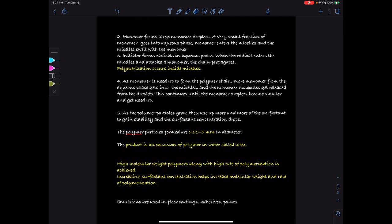We can get high molecular weight polymers along with high rate of polymerization in emulsion polymerization, and increasing the surfactant concentration is one way to increase the molecular weight and rate of polymerization.